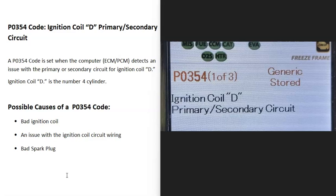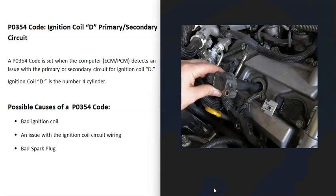Well, it's an ignition coil D primary secondary circuit. And what does this mean? Well, every cylinder on the engine needs a coil to work with the spark plug to ignite the air-fuel gas ratio mixture that's going into the cylinders.